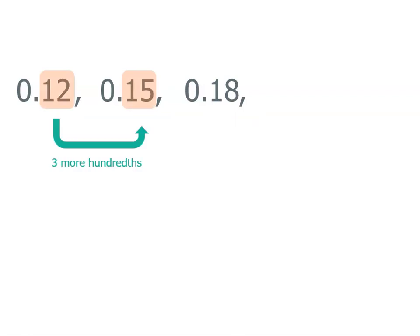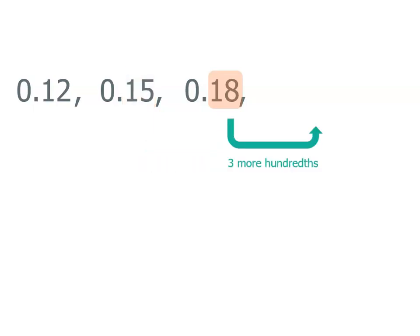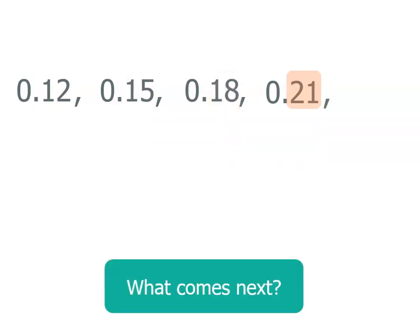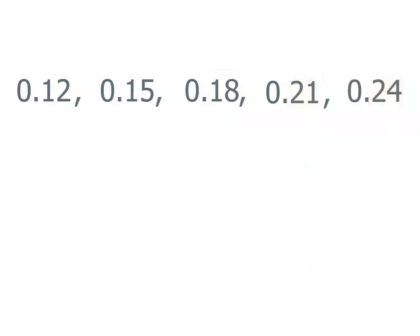Let's take a look. 12 hundredths plus 3 more hundredths does make 15 hundredths. Then if we have another 3 hundredths, we get 18 hundredths. So what we need to do now is add on another 3 hundredths, and that means we'll get 21 hundredths. And one more number — 21 plus 3 is 24 — so we get 24 hundredths.